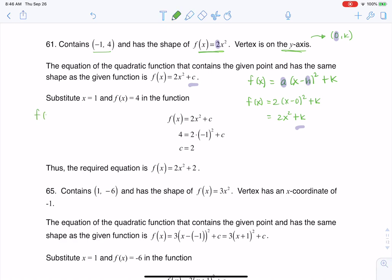We have the general form, or some refer to this as standard form: ax² + bx + c. And then there's vertex form: a(x - h)² + k.